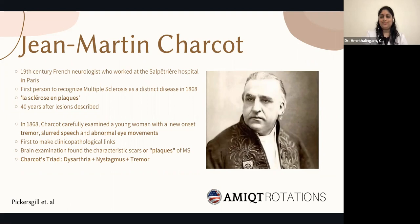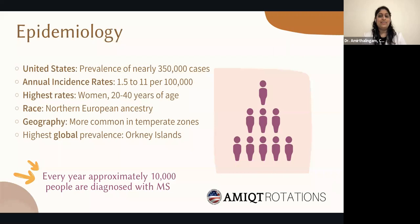Multiple sclerosis has a very unique epidemiology. In the United States, the prevalence is nearly 350,000 cases, with an annual incidence rate of 1.5 to 11 per 100,000. The highest rate is seen in women, particularly between 20 to 40 years of age, though younger children and older adults can also be affected. Northern European ancestry is more common, and geographically, the temperate zones show the highest rates. The highest global prevalence is in the Orkney Islands, just north of Scotland, and approximately 10,000 people are diagnosed with MS every year.